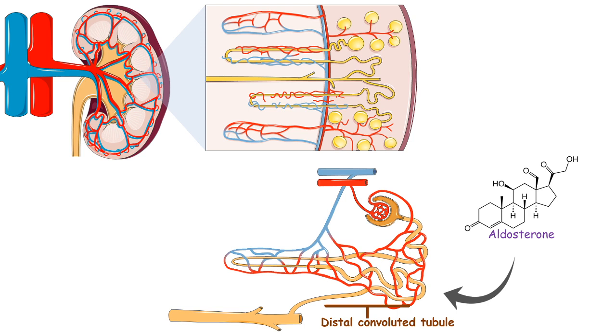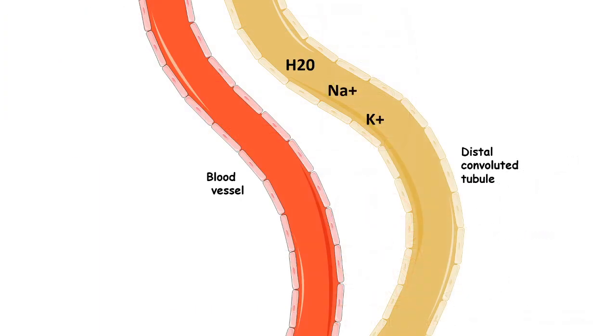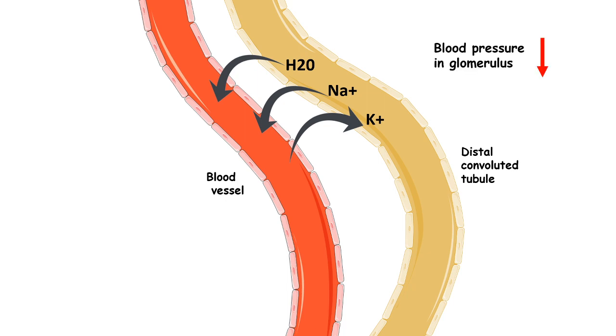Whenever there is a reduction in blood pressure in the nephrons or glomerular filtration unit, the kidney would try to increase blood pressure by absorbing more sodium and water, and that is positively regulated by aldosterone. Aldosterone also allows secretion of potassium in the urine. When glomerular blood pressure is down, aldosterone kicks in and positively regulates the reabsorption process. They allow the expression of sodium and water transporters on the surface of distal convoluted tubules, thereby helping in reabsorption.